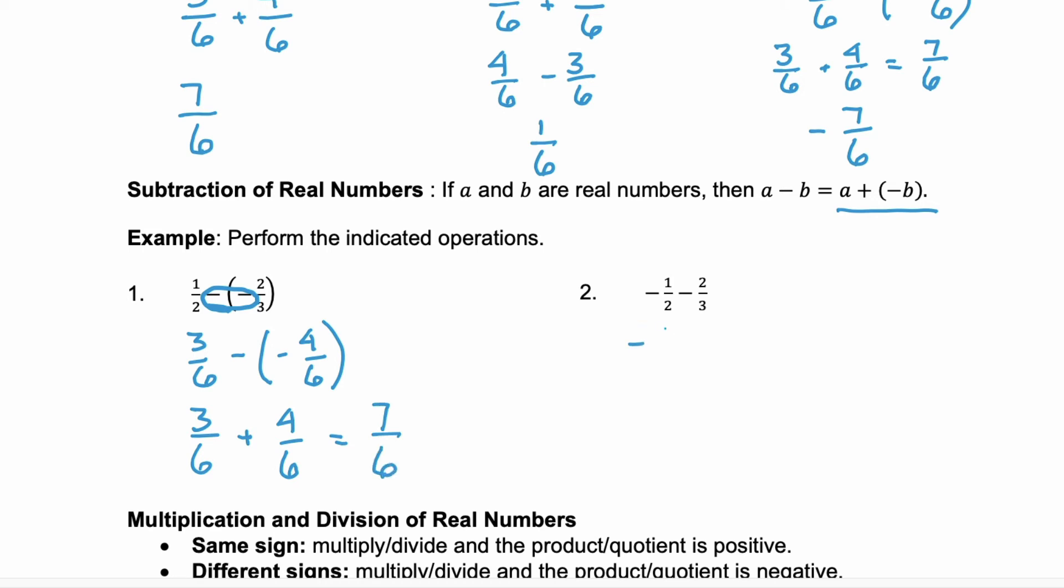Now again rewrite those fractions. We have negative 3/6 minus 4/6, and we're subtracting 4/6. Notice that this is exactly the same as number 3 above. We had negative 3/6 minus 4/6. Right? Because it was negative 3/6, we can change it to addition of the opposite.